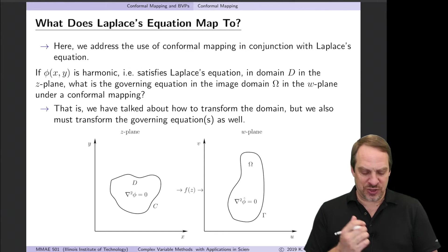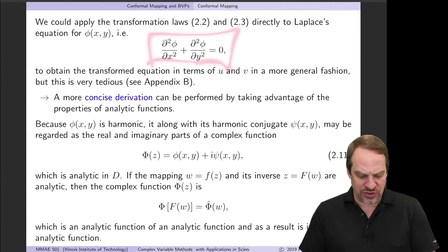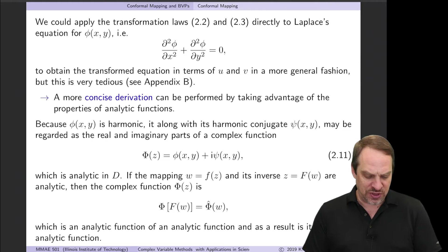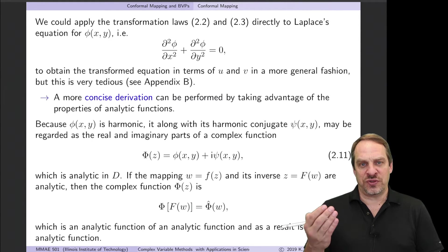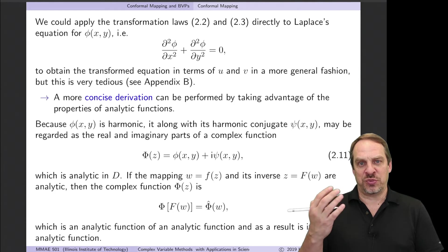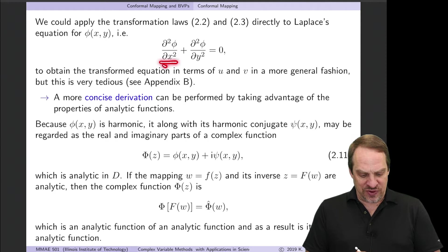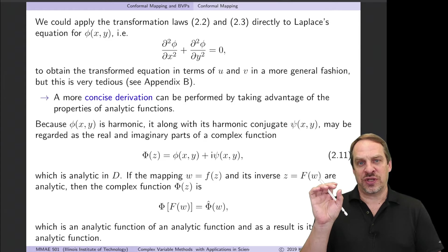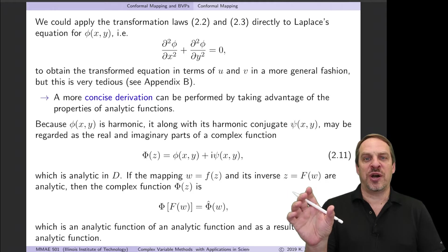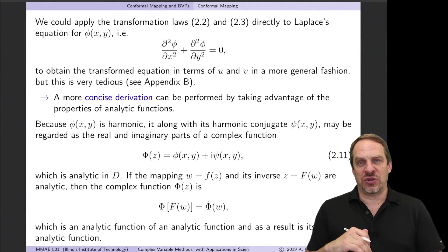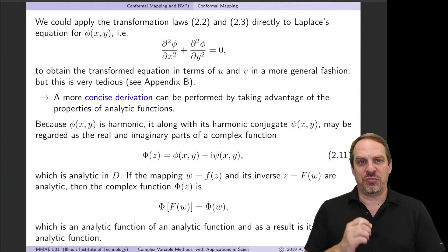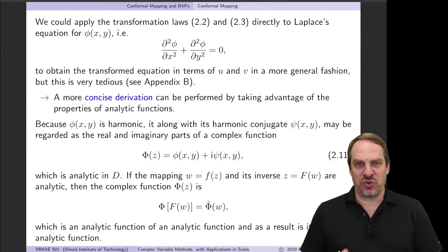The answer is very nice and quite unexpected. Here's Laplace's equation in Cartesian coordinates: partial squared phi over partial x squared plus partial squared phi over partial y squared equals zero. There are really two ways to do this. The typical way is to use the transformation laws developed earlier in this chapter for partial over partial x and partial over partial y, to transform from x, y to u, v coordinates. For second derivatives this gets very messy and tedious — it takes about three pages in the appendix. But because we're dealing with analytic functions, we can use a much more concise way.